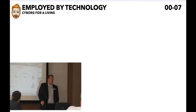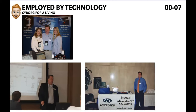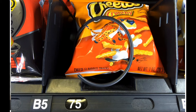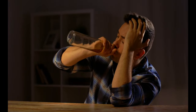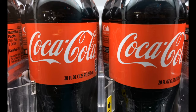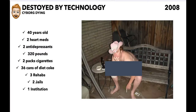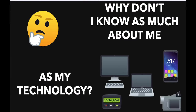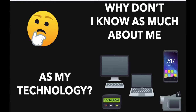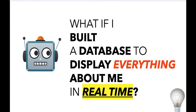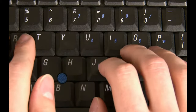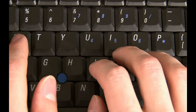Things got hectic around 2006, 2007. I gained a bunch of weight, got in a little bit of trouble. My technology career was doing really well, but my health was tanking. By the time I turned 40 in 2008, I was on two different heart medications, two different antidepressants, weighed 320 pounds, drank 36 cans of Diet Coke, had been in jail a couple of times for DUI, and had been to rehab. All the technology in my life knew about me, but I didn't know about it — I wasn't using the same principles to get to know myself.